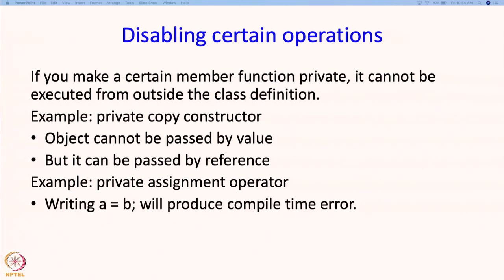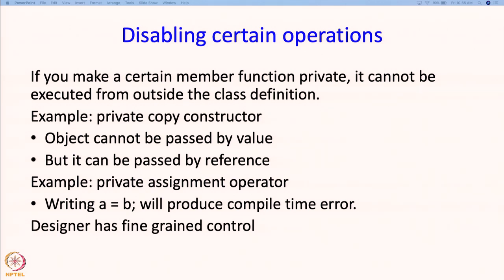Similarly, you can make the assignment operator private. In that case, writing something like a equals b will produce a compile-time error — you are telling the user of that class: please do not make copies of this. For graphics objects, we could have said copies are not allowed, since creating a new graphics object already handles that additional work. But C++ gives you the option, and access control operators together with member functions give the designer a great amount of fine control.